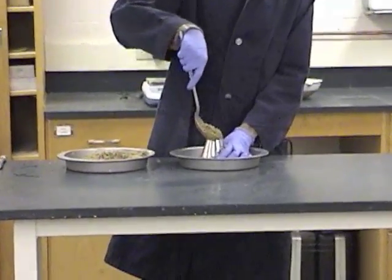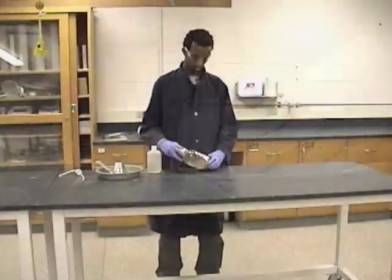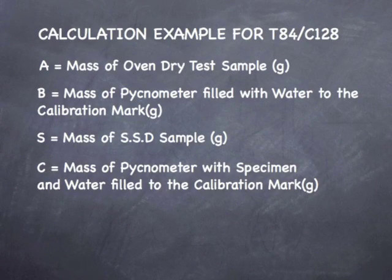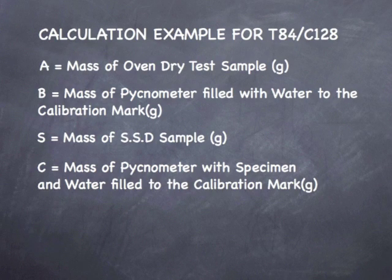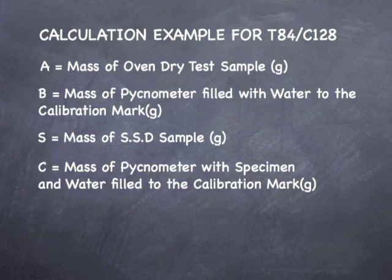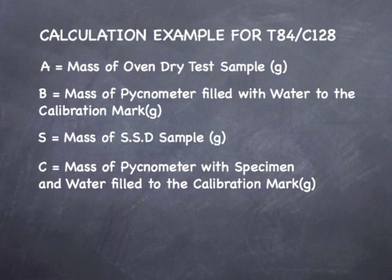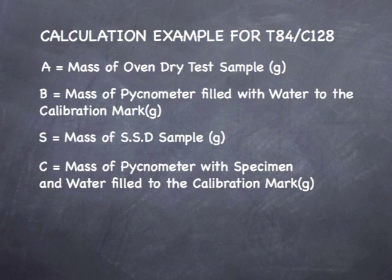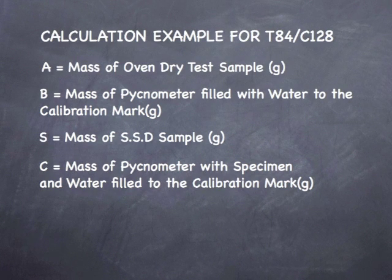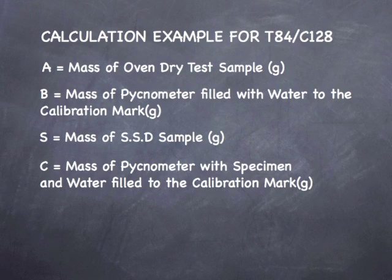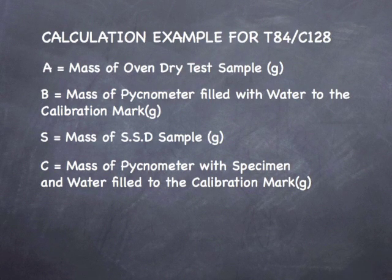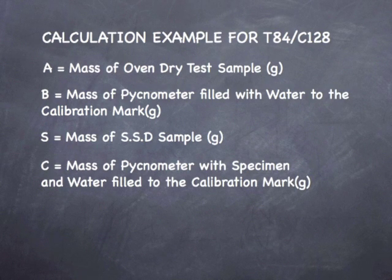Now that we have completed all the physical aspects of our tests, we can go ahead and do our calculations. When we have completed our test, we should have 4 weights recorded. The first is listed as A — the weight of the oven dry specimen. Next is B — the weight of the mason jar filled to the calibration point with just water. Next is S — the weight of the saturated surface dry specimen. And finally C — the weight of the SSD specimen in the mason jar with the water filled to the calibration mark.